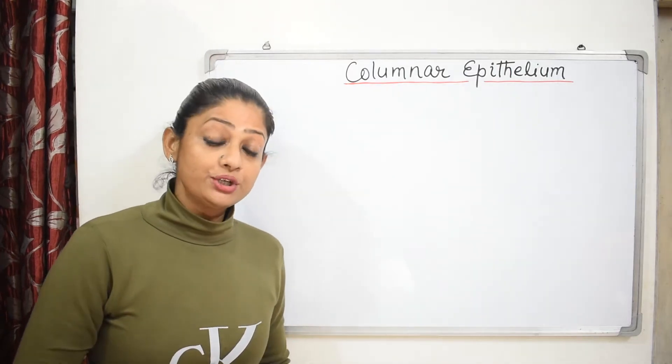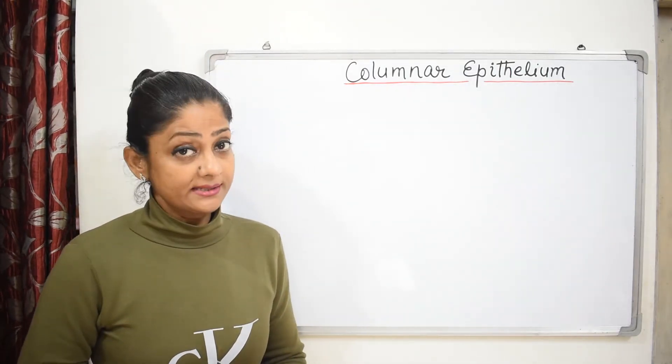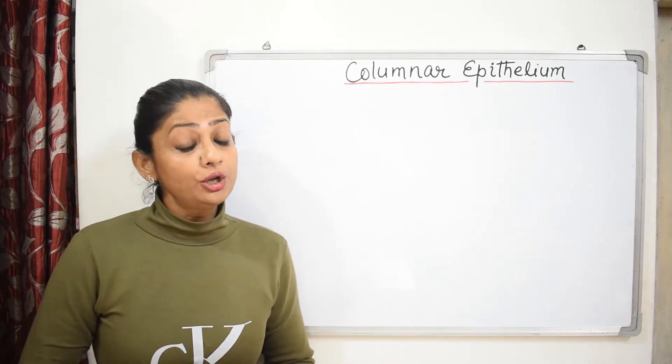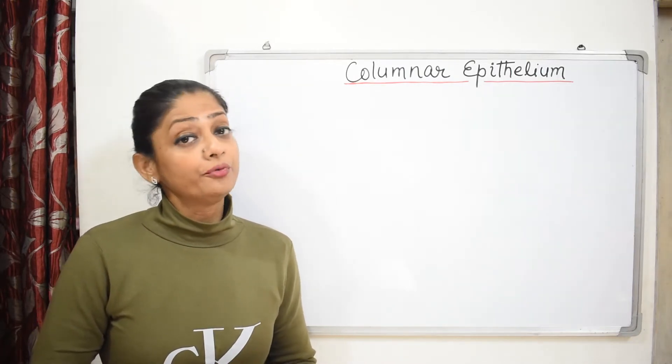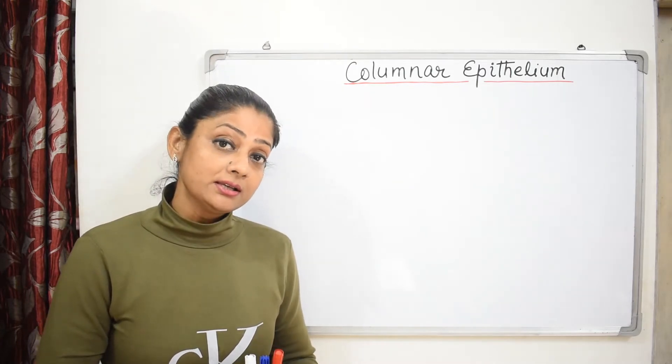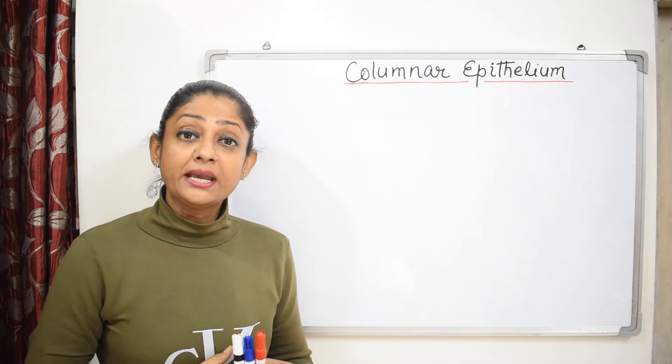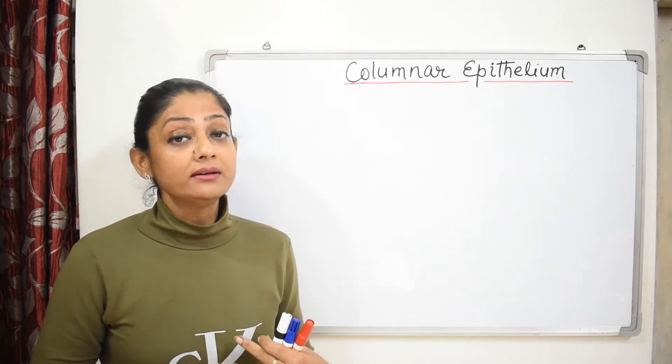Hello everyone, in this video we will study about the third and last type of epithelium, that is columnar epithelium. Columnar epithelium is made up of tall pillar-like cells. The main function of this tissue is secretion and absorption.